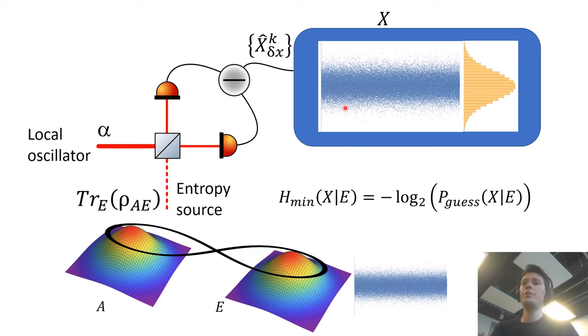And now the correct amount of entropy to extract is given by the conditioned min entropy where the conditioning is done on any classical or quantum side information.